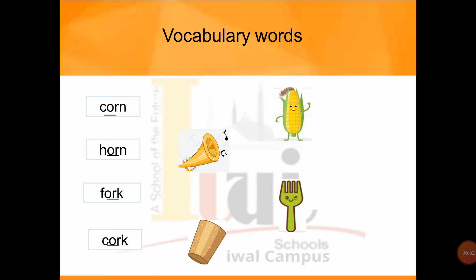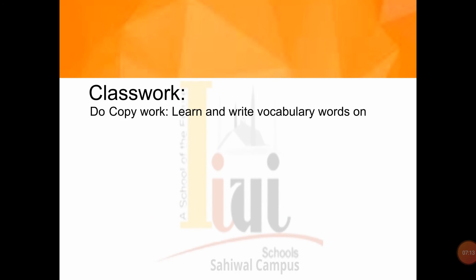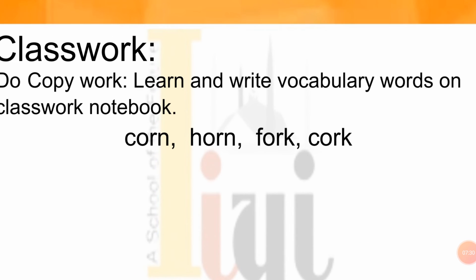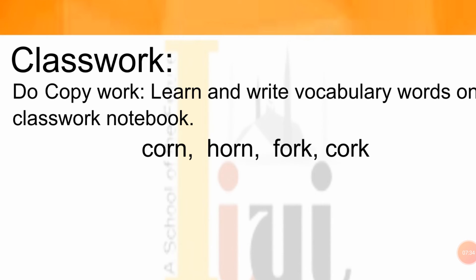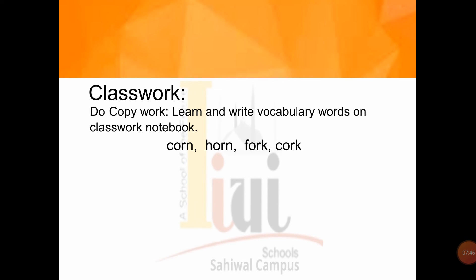Very good. Now read them yourself — I will not read for you. See the words yourself in your notebook and read them. Pause the video and read these words. Have you done? Very good. This was our today's classwork — we have done our copywork. We learned and written vocabulary words in our notebook. You learned sound OR and vocabulary words. The vocabulary words were: C-O-R-N corn, H-O-R-N horn, F-O-R-K fork, C-O-R-K cork. Very good.